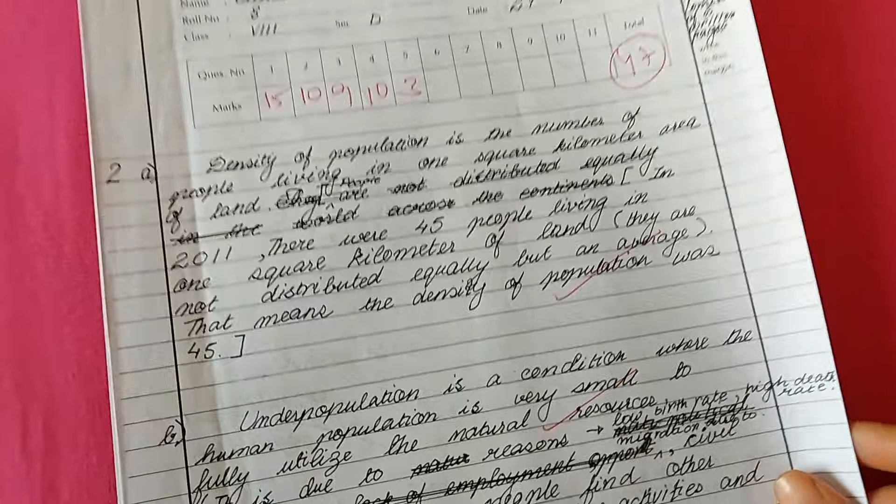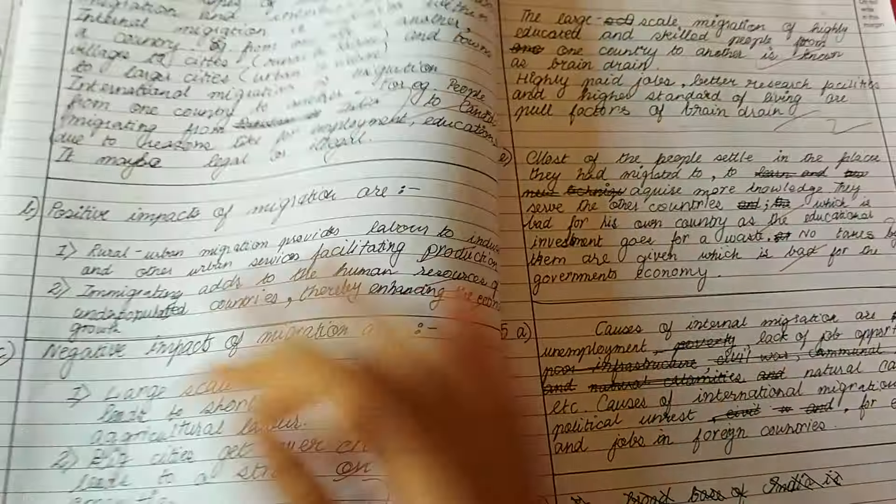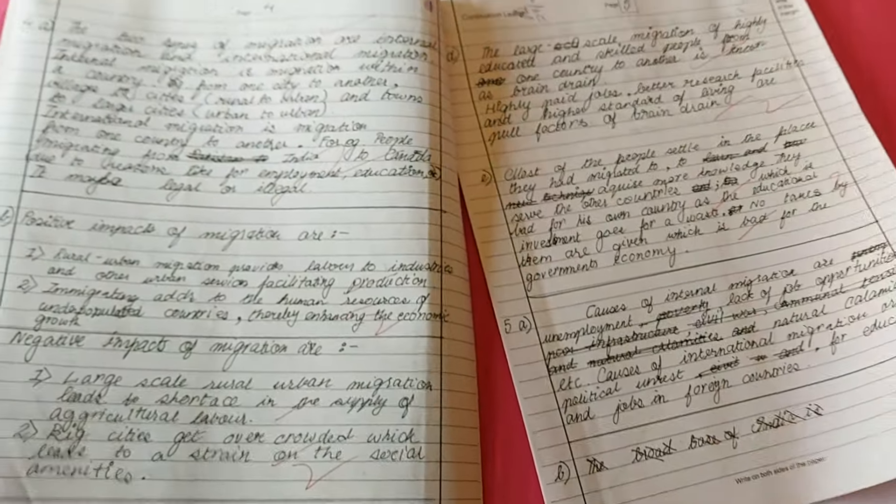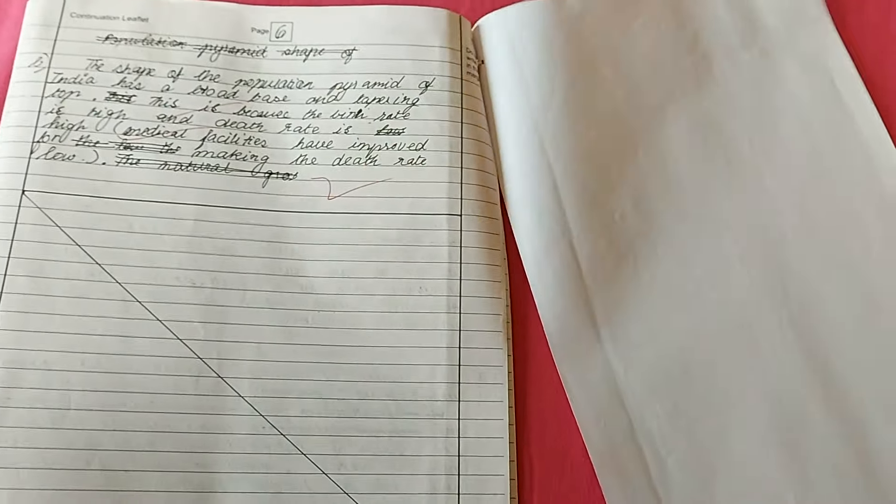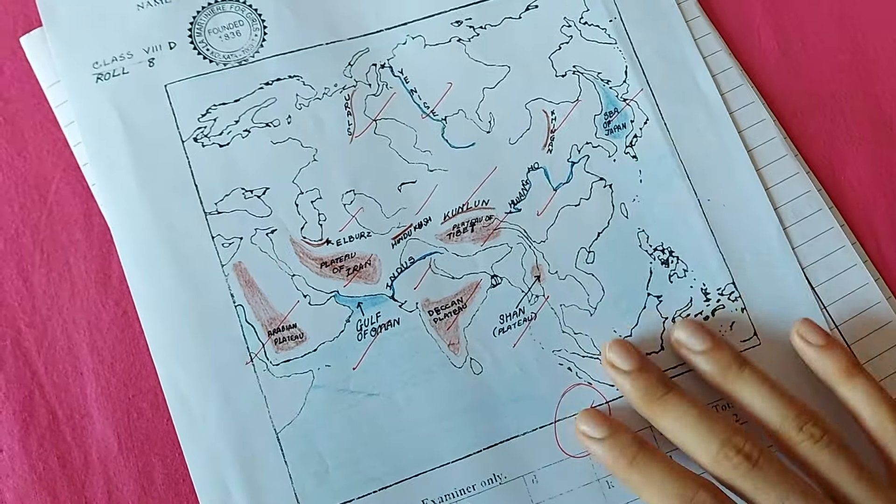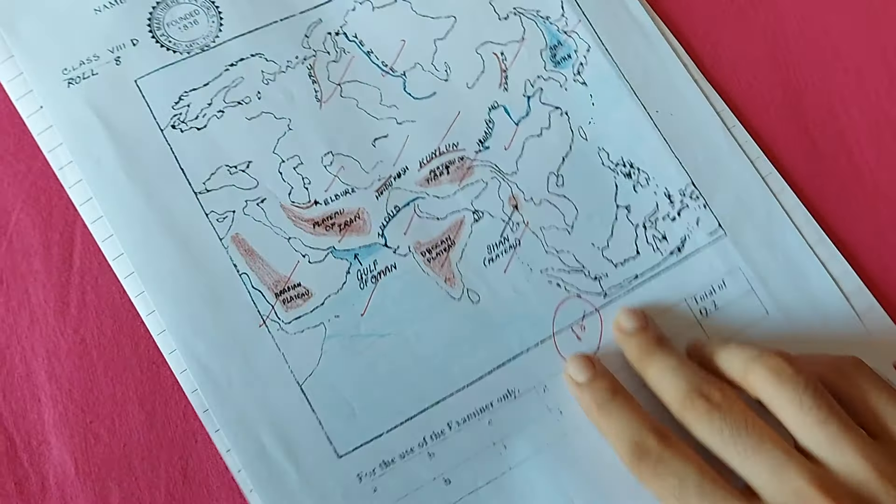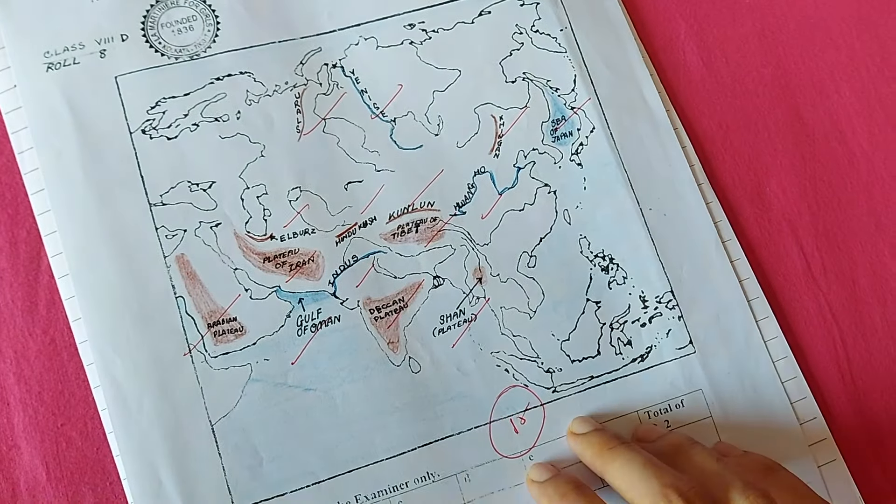For geography I got a 47, and my paper is not that neat over here, but it is still decent. Some students have really bad handwriting and really bad paper presentation, even worse than this. These answer scripts are actually quite old, these are not my 10th answer scripts, these are for class 8. But I could find these, so I just shared because it really doesn't matter. Paper presentation is for all classes.